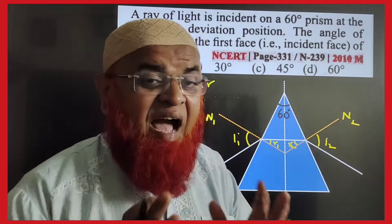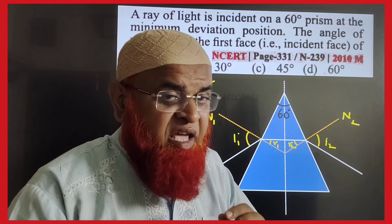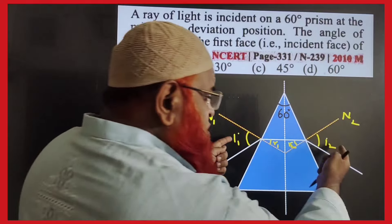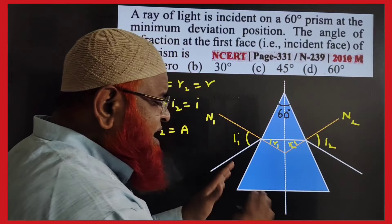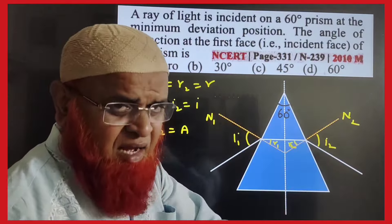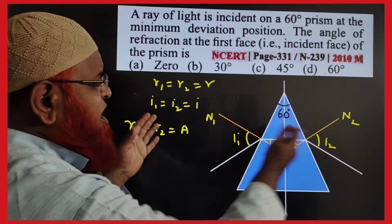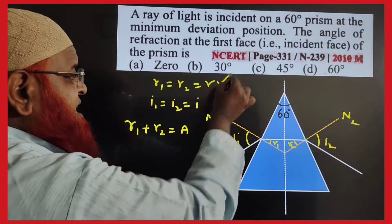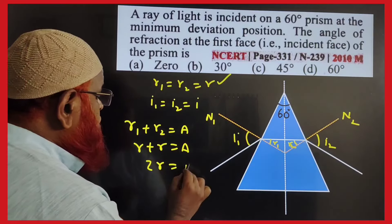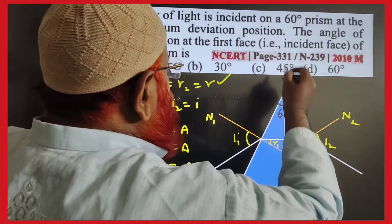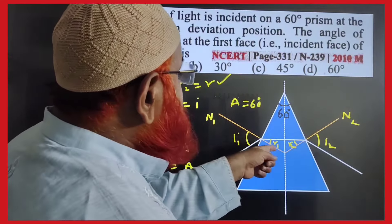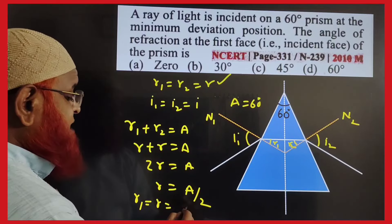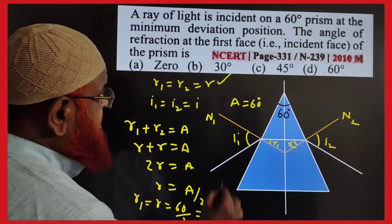At angle of minimum deviation, there is symmetry in the prism: i1 = i2 = i and r1 = r2 = r. From r1 + r2 = A, we get 2r = A, so r = A/2. With A = 60°, the angle of refraction r1 = A/2 = 30 degrees.